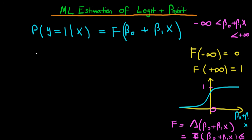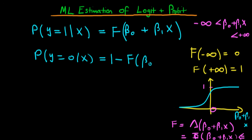This is the probability that y equals 1 given x. If we wanted to find the probability that y equals 0 given x, that's easy to find — it's just 1 minus the probability that y equals 1 given x, because y is either 1 or 0. So 1 minus this probability is just 1 minus f of beta 0 plus beta 1 times x.